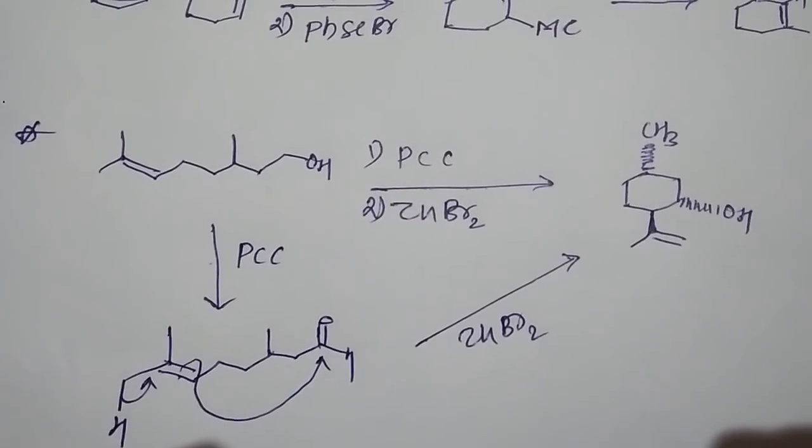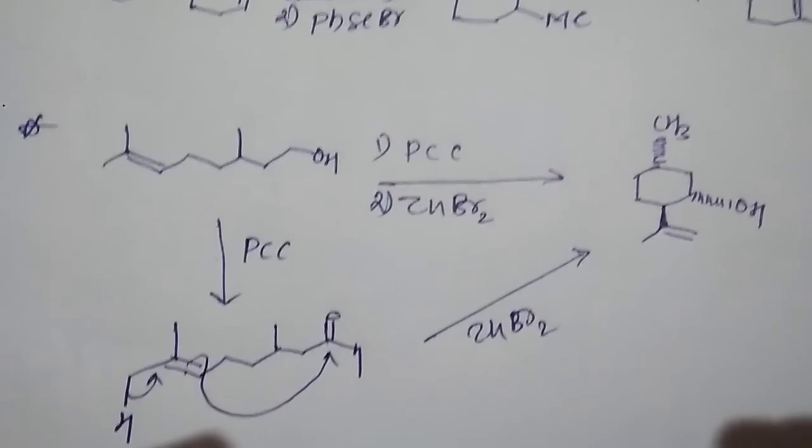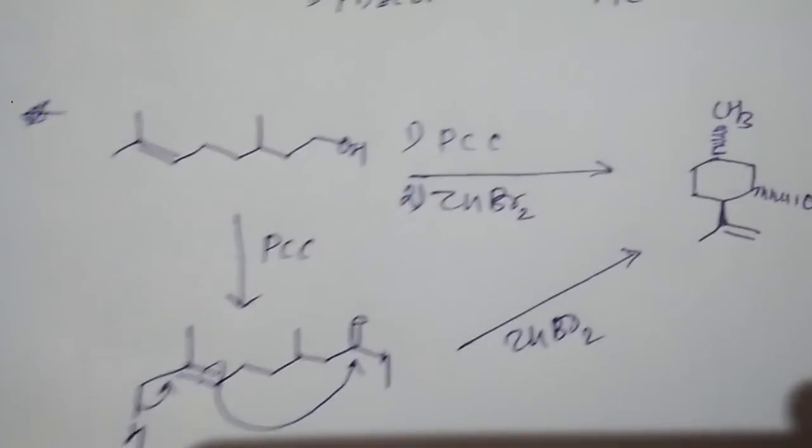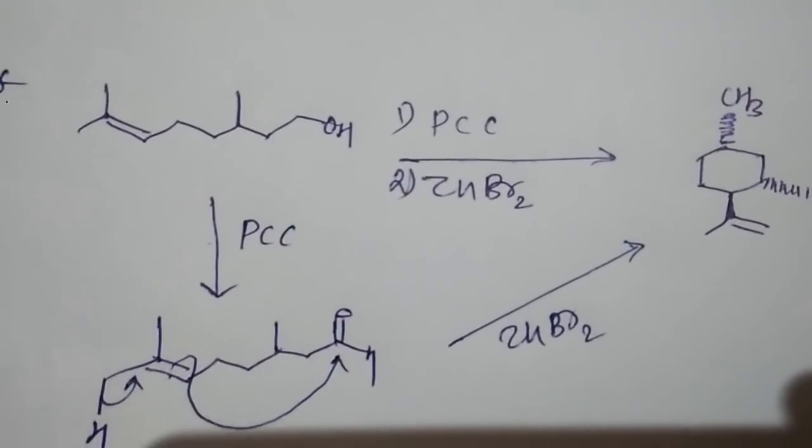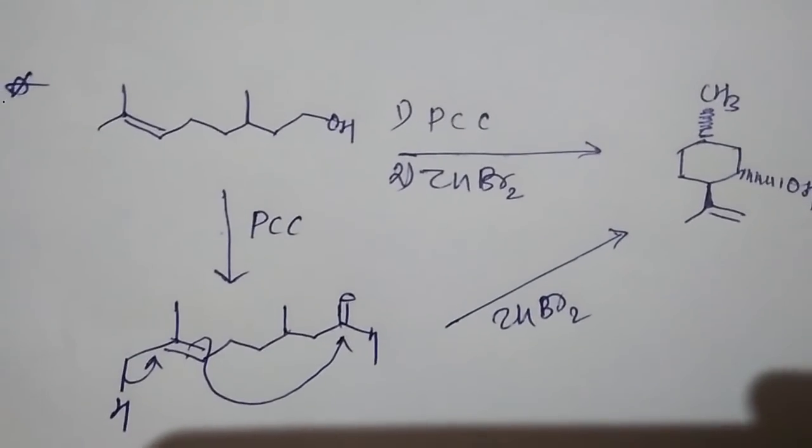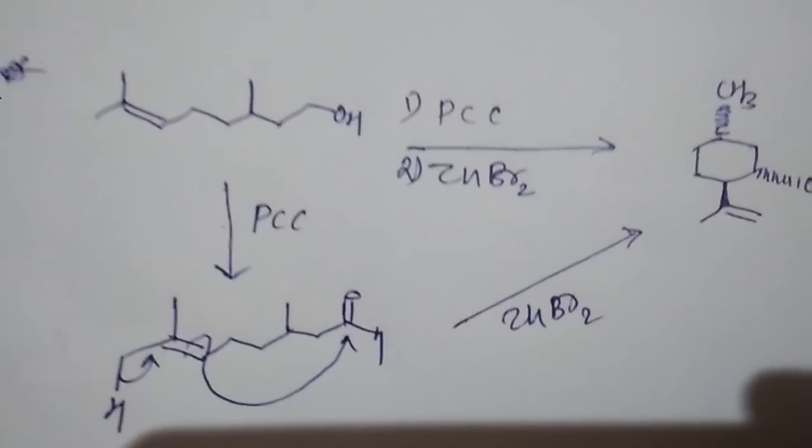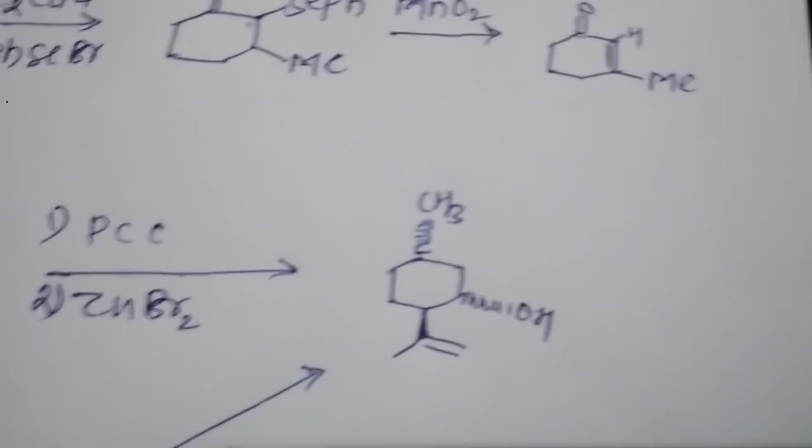Then in presence of Lewis acid, that olefin undergoes allelic rearrangement where there is proton shift and then rearrangement with the aldehyde and then cyclization with aldehyde to get this carbon type derivatives. This is the correct answer for that question.